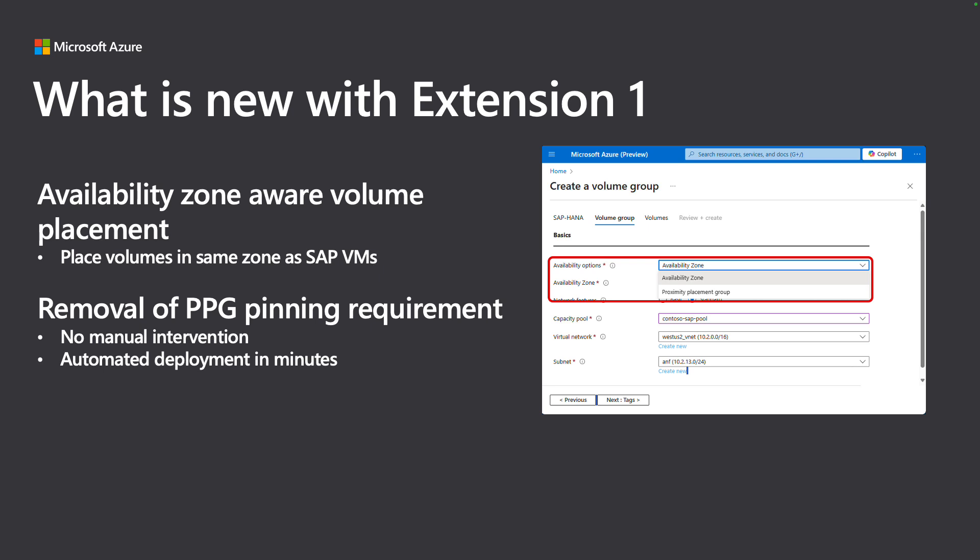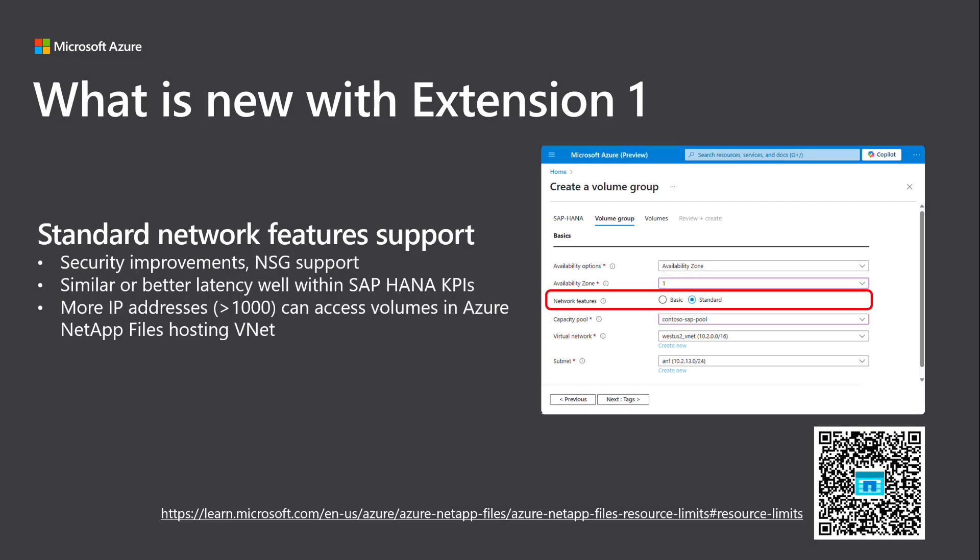You can now select the Availability Zone to deploy the volumes into, ensuring that storage latency is within the Availability Zone latency envelope, which is well within SAP HANA KPI specifications. And Standard Network Features.